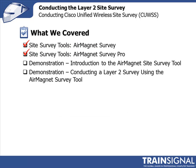The AirMagnet Survey Pro tool also comes with a planning tool, which can be quite useful when preparing to do your Layer 1 site survey. Here we were using AirMagnet Survey Pro to do a Layer 2 site survey. We did two demonstrations. The first one was to get you familiar with the tool — after watching it you should be comfortable with the menu bar, the toolbar, what the legends mean, where the map is brought in and displayed in the map window, the project window, the data window, and all the navigation facilities.